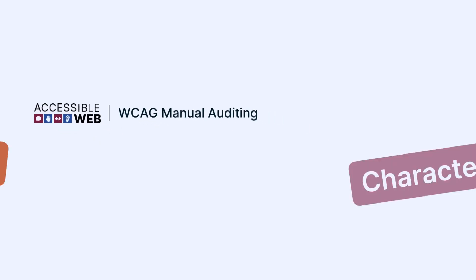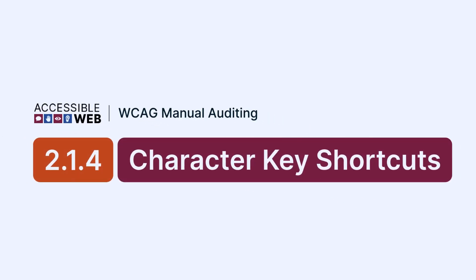Accessible Web. WCAG Manual Auditing. Success Criterion 2.1.4, Character Key Shortcuts. In this video, we'll show you how to check for keyboard shortcuts that may conflict with assistive technology or unintended keystrokes. Let's jump in.